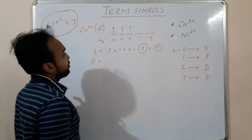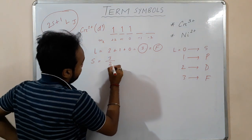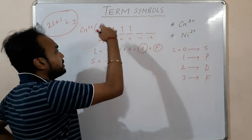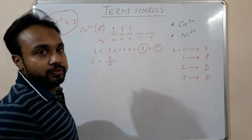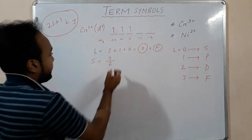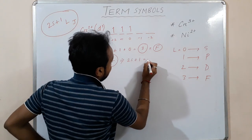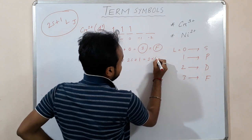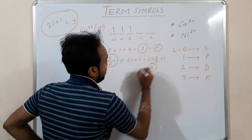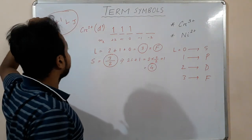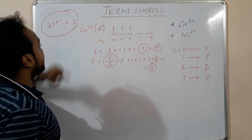Now for the three electrons, in the ground state all spins are the same — +½, +½, +½ — so S = 3/2. The corresponding 2S+1 value is 2×(3/2)+1 = 4. So we have 2S+1 = 4 and L = F. Now we need to find the J value.